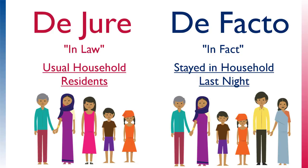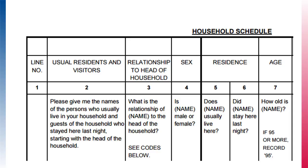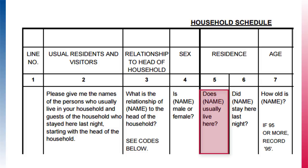Let's look at the household questionnaire. When an interviewer comes to a household, they will ask to speak to the head of the household. After proper consent is given, the interviewer will start to fill in the household schedule. The first question asks the household head to give the names of persons who usually live in the household and guests who stayed there last night, starting with the head of the household. Those who usually live there are considered de jure household members.